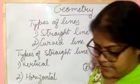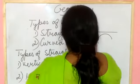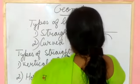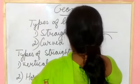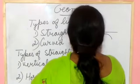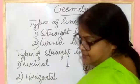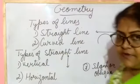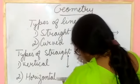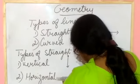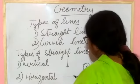A vertical line means if a line is like this way, then you can say it is a vertical line. Next one is a horizontal line — if a line is like this way, then you can say this line is a horizontal line.